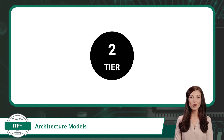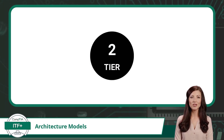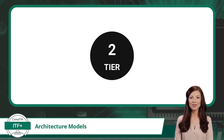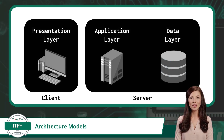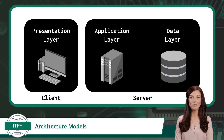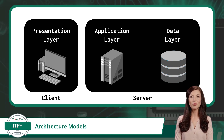Let's break down our one-tier architecture into a two-tier architecture. Here the components of an application will be divided into two main parts: the client and the server. In this two-tier architecture model, the presentation layer will be handled by the client side, while the application layer and the data layer will be handled by the server side.